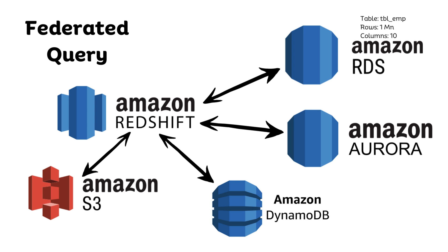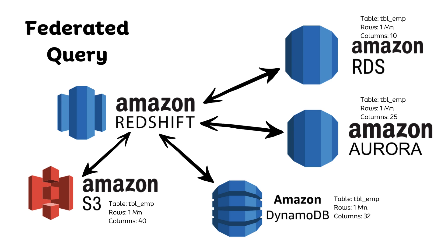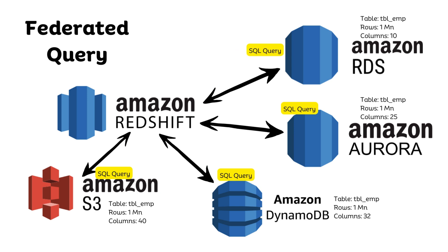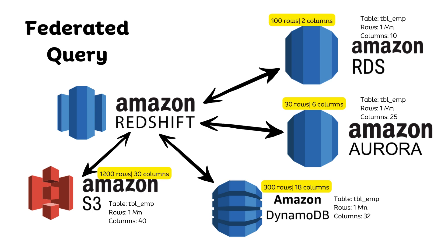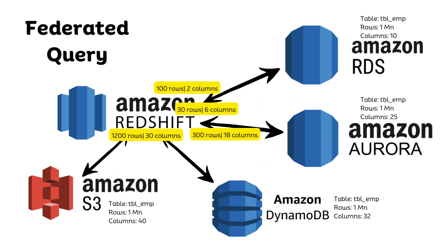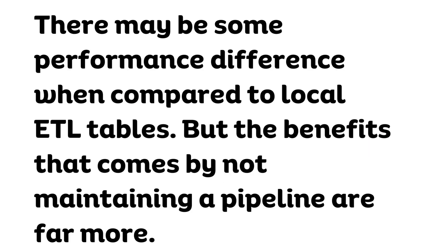Say the table you're querying has 1 million rows across different data sources: Amazon RDS has 1 million rows with 10 columns, Amazon Aurora has 1 million rows with 25 columns, Amazon DynamoDB has 1 million rows with 32 columns, and Amazon S3 has 1 million rows with 40 columns. Redshift will push the filter conditions and required column information from the SQL query to the respective data sources. Each data source will return only the required rows and columns — the entire table is not returned unless required. There may be some performance difference compared to local ETL tables, but the benefits of not maintaining a pipeline are far greater.